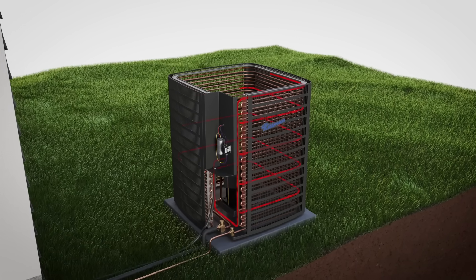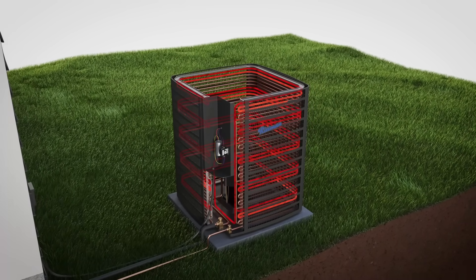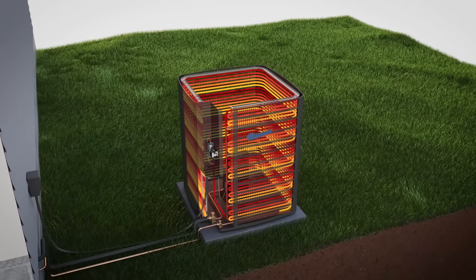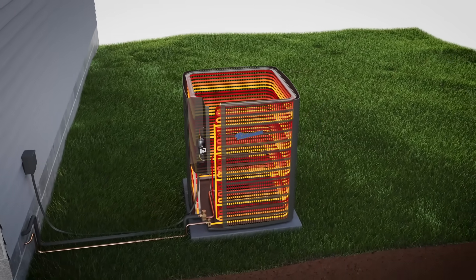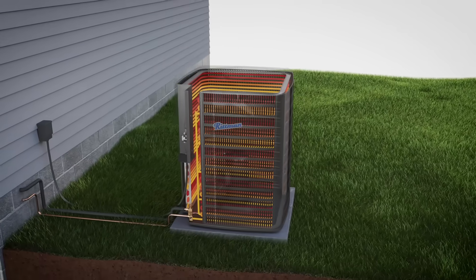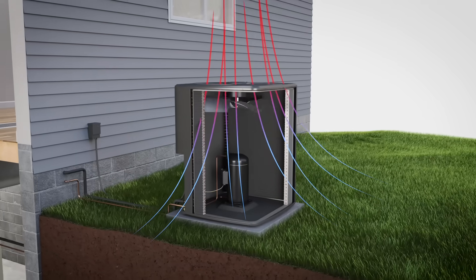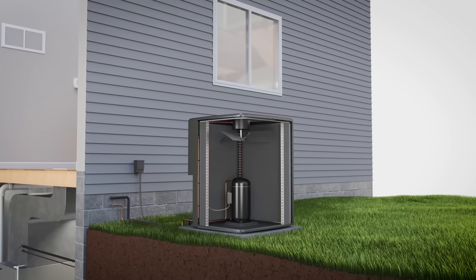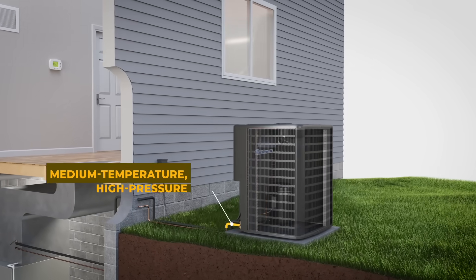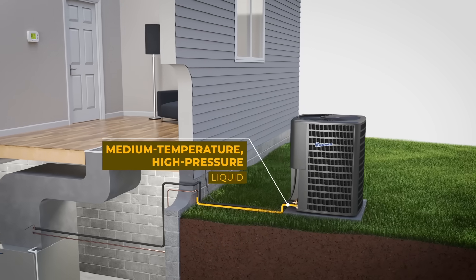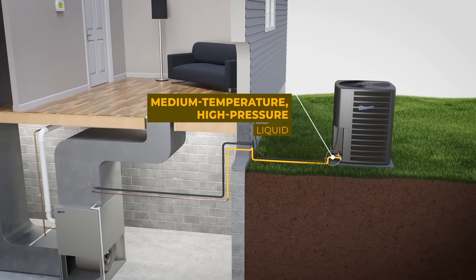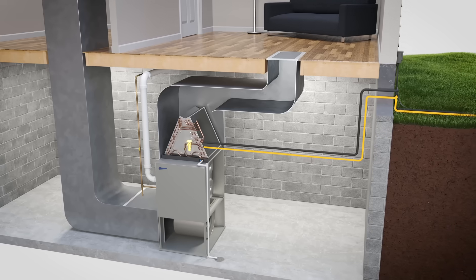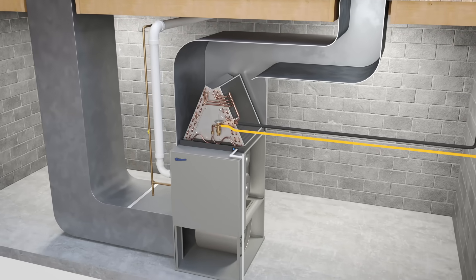After it's compressed, the refrigerant leaves as a high temperature, high pressure vapor. It then travels through the condenser coil where the vapor condenses into a liquid. The heat it has collected indoors and after compression is released outside — the fan inside the unit helps with this process. The refrigerant leaves the condenser as a medium temperature, high pressure liquid.